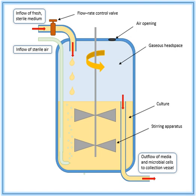Fermentation setups closely related to the chemostat are the turbidostat, the auxostat, and the retentostat. In retentostats, culture liquid is also removed from the bioreactor, but a filter retains the biomass. In this case, the biomass concentration increases until the nutrient requirement for biomass maintenance has become equal to the amount of limiting nutrient that can be consumed.